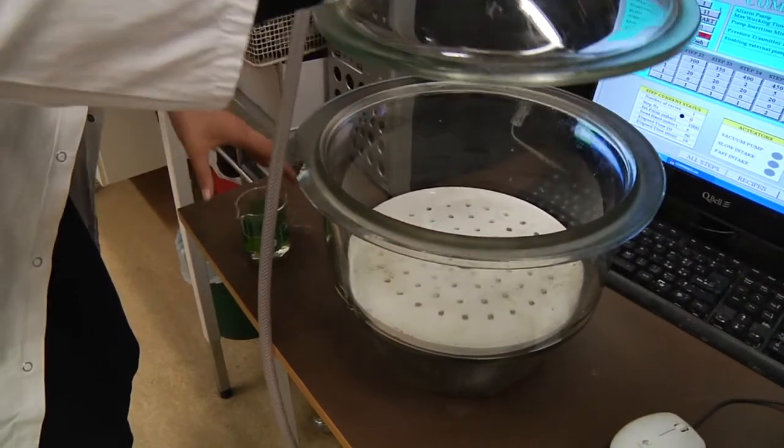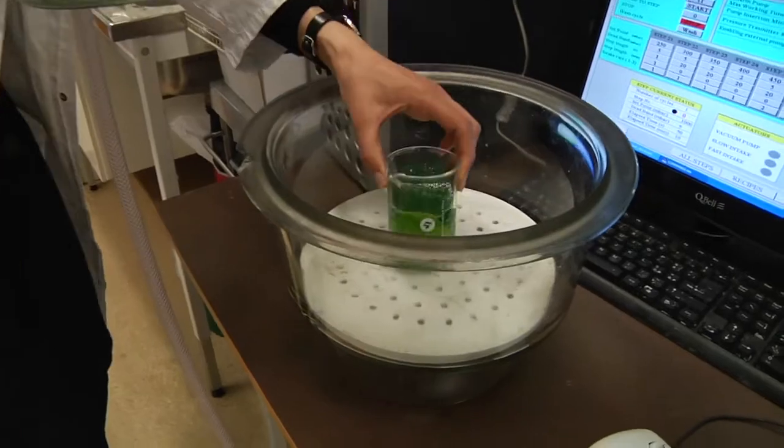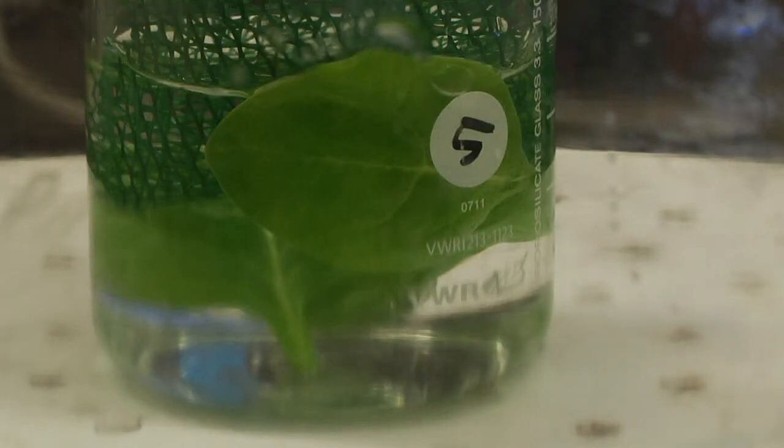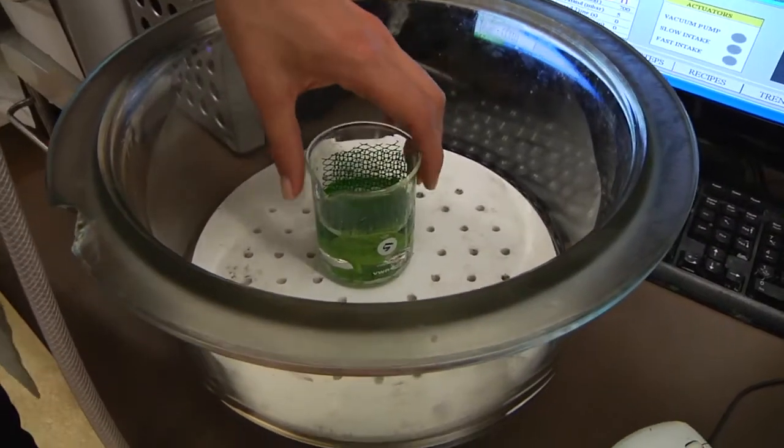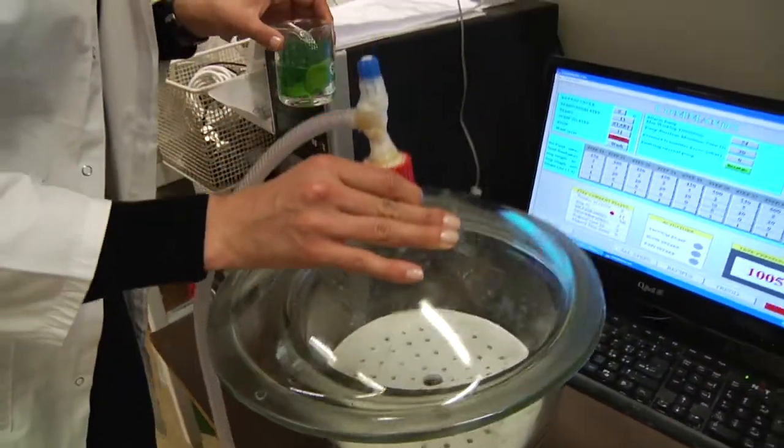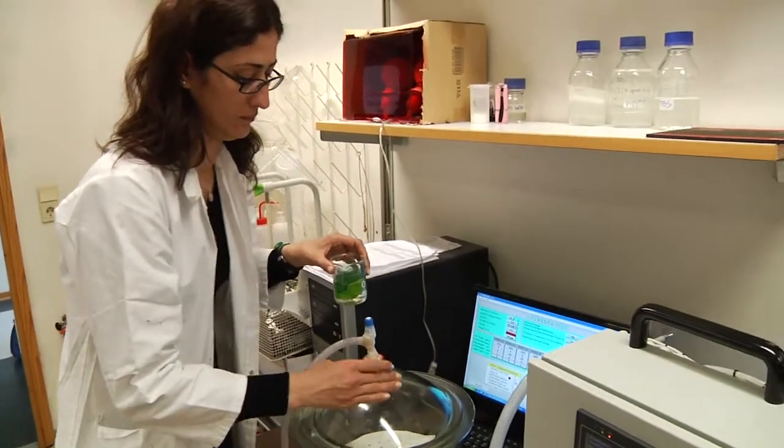Fruits and vegetables, they have a lot of air inside. So what we do is to take away the air from the tissue, applying some vacuum, and then the sugar that is in solution will replace the air.